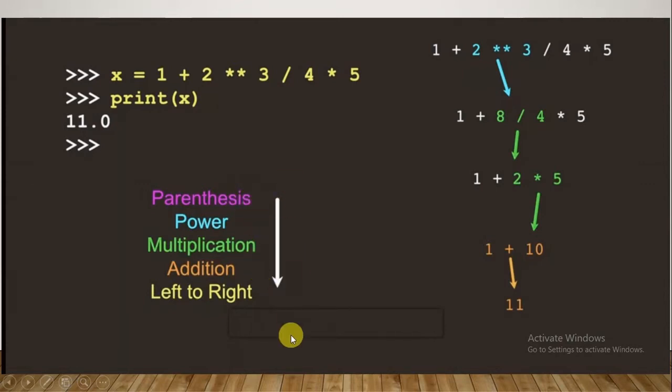For x, we have this calculation to be assigned. We'll do it with the precedence rules. First, the parenthesis is considered. There is no parenthesis here, so next power - we have one power, which is two to the power, we got the answer. Then the multiplication or division should be considered.